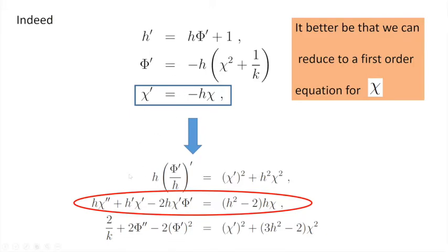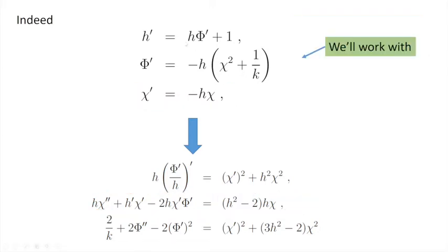If FZZ is correct — and we have very good reasons to think it is — then we should be able to reduce these complicated second-order equations into a first-order equation. And this turns out to be the case. I can replace all of this with first-order equations, and any solution to this first-order equation is also a solution to the Orbifolded-Polchinski equations of motion.